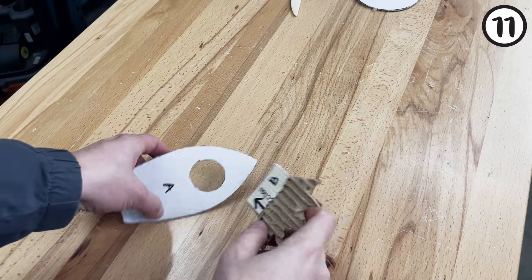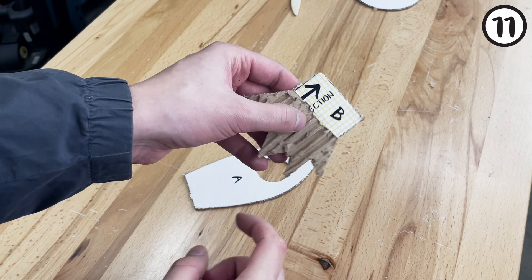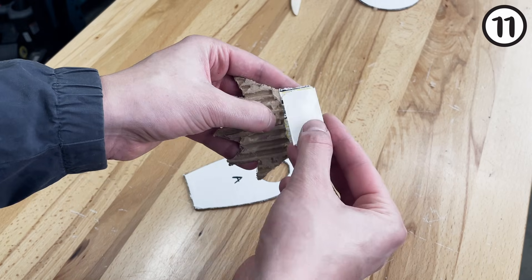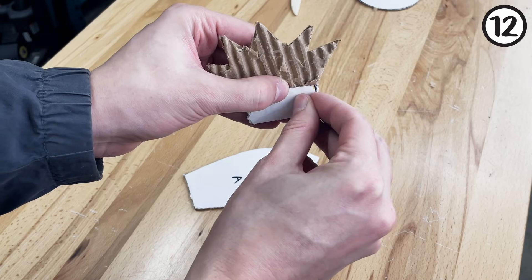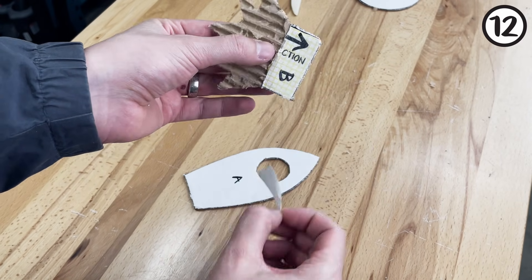Step 11. Apply double sided tape or glue to the flames, Part B. Step 12. Attach the flames to the rocket body, Part A.